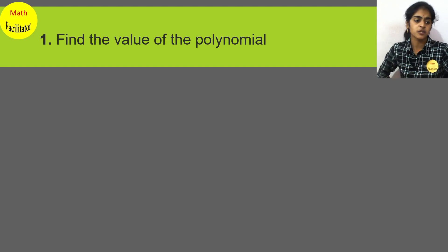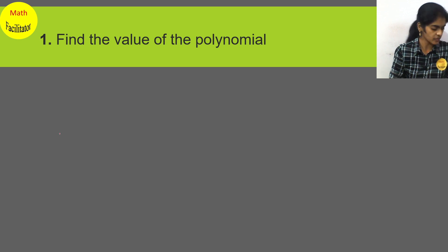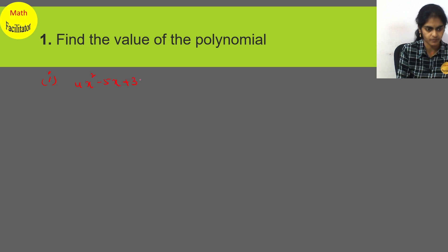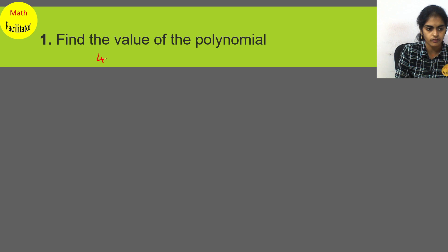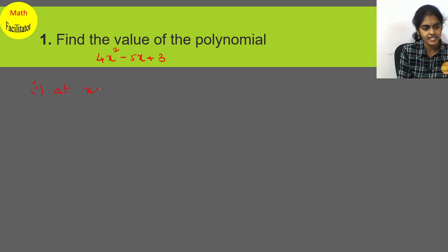The very first question says you need to find the value of the polynomial. The polynomial given to you is 4x² minus 5x plus 3. You have to find the value of this particular polynomial at x equal to 0.